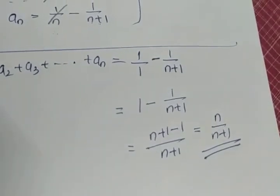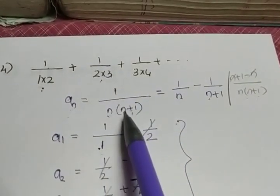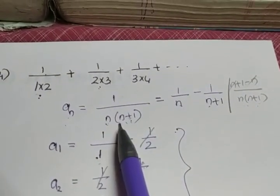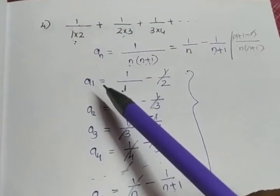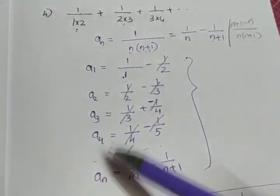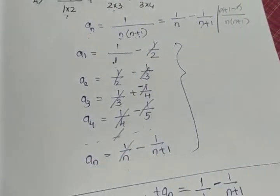We are not applying any formula of sigma n, sigma n square etc. For this question, you have to write the nth term. Instead of the nth term, we have to write it as 1 by n minus 1 by n plus 1 and substitute the value of n as 1, 2, 3 etc. And directly add the terms.